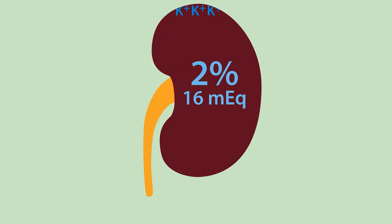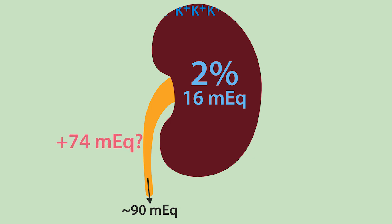Did you know that the kidneys excrete only 2%, or about 16 milliequivalents, of the potassium that is filtered? That's a far cry from the roughly 90 milliequivalents that the kidneys excrete every day. So how do the kidneys excrete an additional 74 milliequivalents?